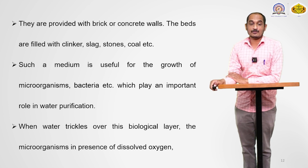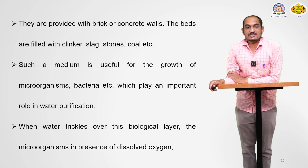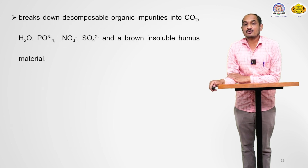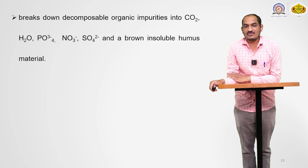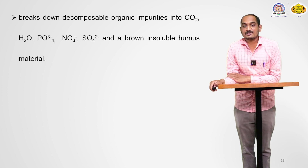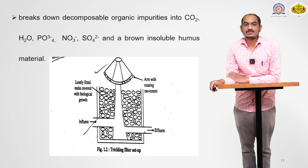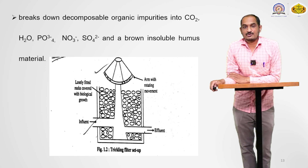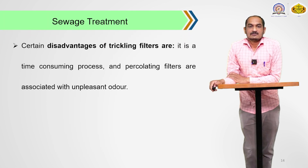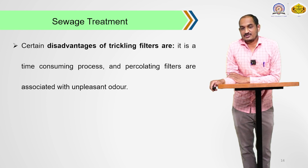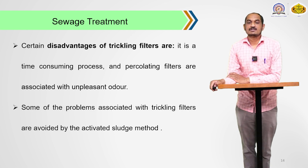Bacteria play an important role in water purification. When water trickles over these biological layers, the microorganisms in the presence of dissolved oxygen break down the organic impurities into carbon dioxide, water, phosphates, nitrates, and sulphates, and a brown insoluble humus material is formed. This is the setup of the trickling filter used for purification of sewage water. A disadvantage is that it is a time-consuming process and percolating filters are associated with an unpleasant odour. Problems with trickling filters are avoided by the activated sludge method.